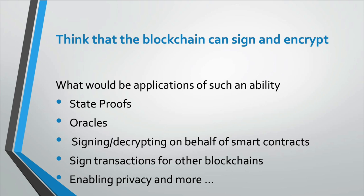Why did we want to offer threshold Schnorr signatures or any threshold functionality? If you have a blockchain, your blockchain can sign and can decrypt. Why is it surprising that a blockchain would sign? The blockchain has no secrecy — everything is visible to everyone. So where do you have keys? These functionalities of signing and decrypting require secret keys, so where are those keys? We'll get into that shortly.